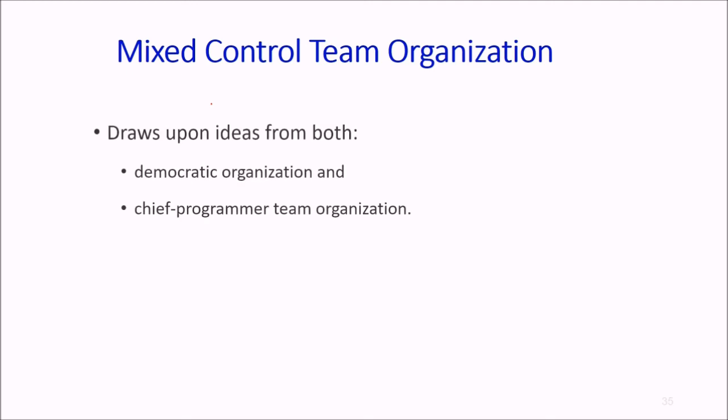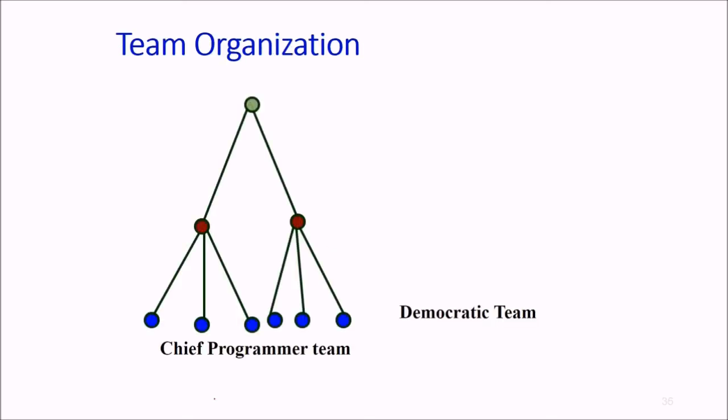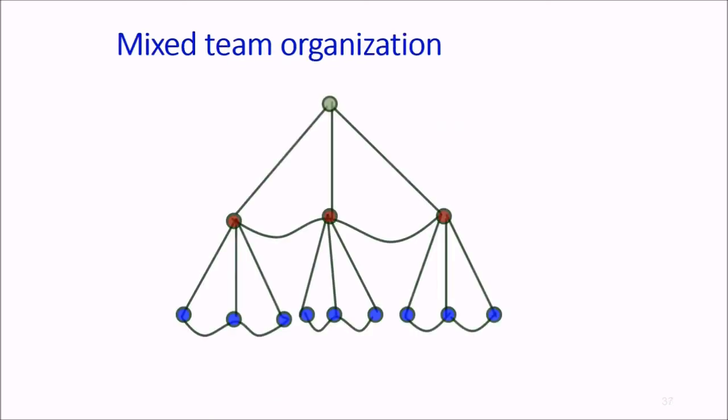Then we come to mixed controlled team organization. It draws ideas from both democratic organization and chief programmer team organization. Communication is limited to a small group that is more likely to benefit from it. For large organizations, this is suitable. This is the chief programmer team structure, this is a democratic team structure, and mixed team structure combines them.